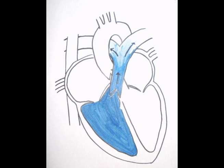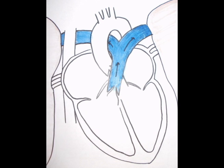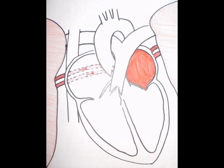Then it passes through the pulmonary valve into the pulmonary trunk, which is a tube that splits into two pulmonary arteries that leave the lungs. Your blood receives oxygen from your lungs, then travels back through the pulmonary veins on the posterior side of the heart.